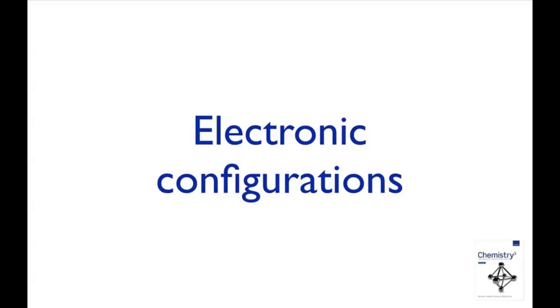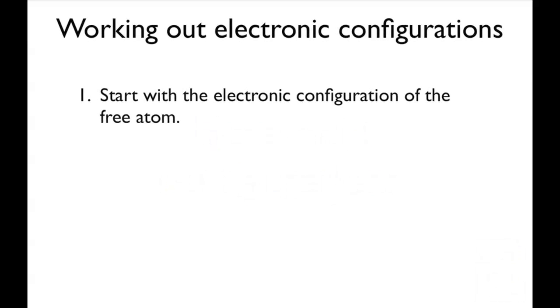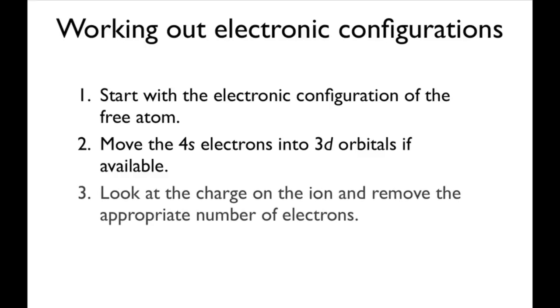The approach we're going to take starts with the electronic configuration of the free atom. That involves moving the 4s electrons into 3d orbitals if available, as these are at lower energy in the ion or compound. Finally, consider the charge on the ion and remove the appropriate number of electrons.